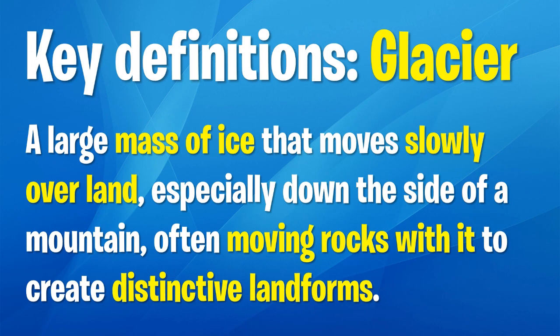The definition of a glacier is a large mass of ice that moves slowly over land, especially down the side of a mountain, often moving rocks with it to create distinctive landforms.